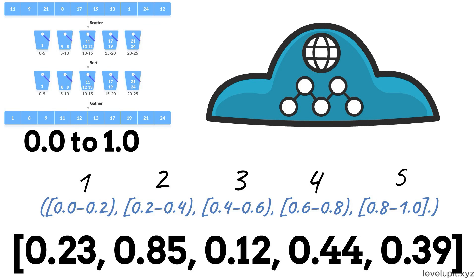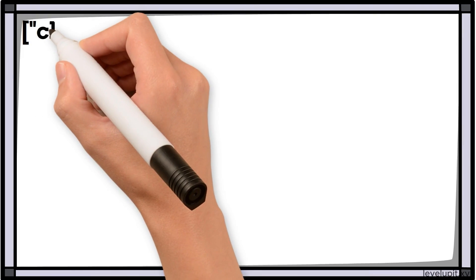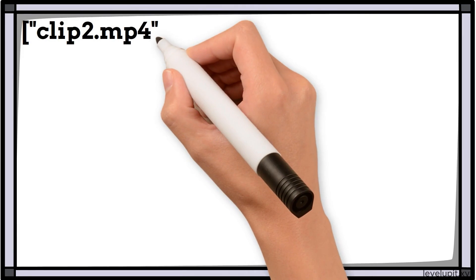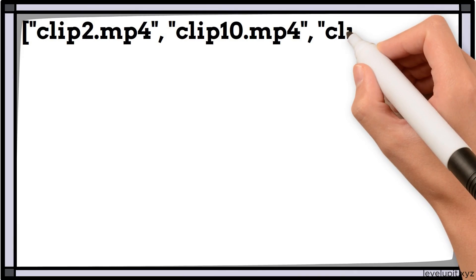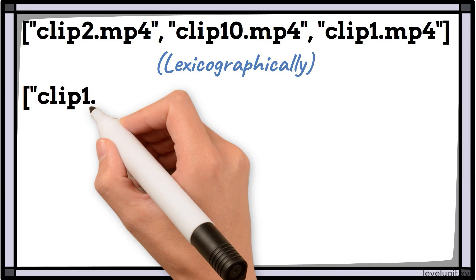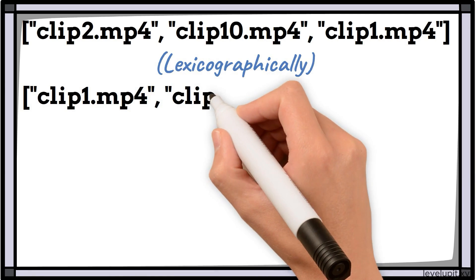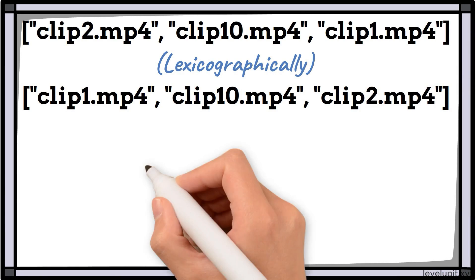Let us tie these to everyday tasks with tiny examples that show why the choice matters. Suppose you have file names like clip2.mp4, clip10.mp4, clip1.mp4. If you sort them lexicographically, you get clip1.mp4, clip10.mp4, clip2.mp4, which looks wrong to humans.